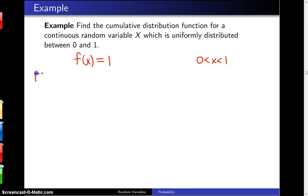So to find the cumulative distribution function capital F of x, that is going to be the probability that the random variable x is less than or equal to x. And that will be the integral from 0 up to x of f of w dw.